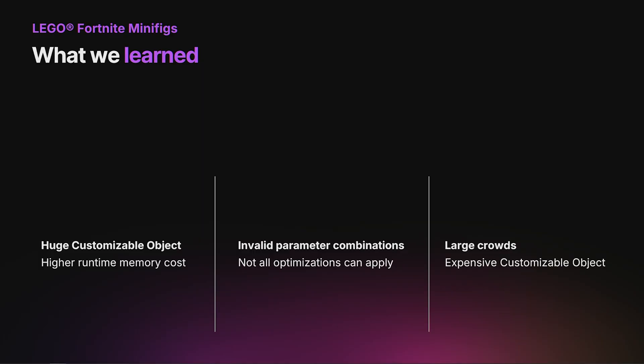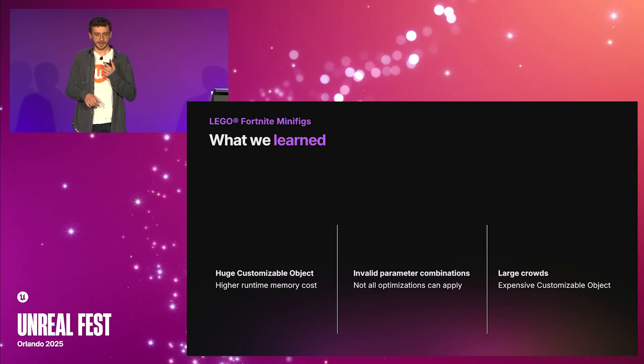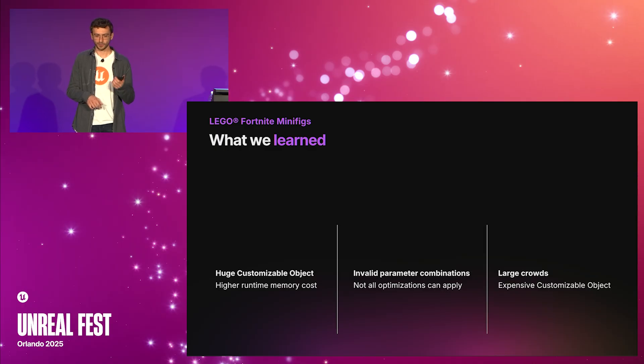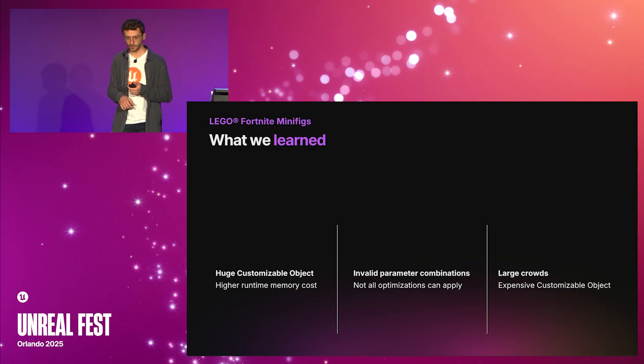Since minifigs was a huge project, we learned a few lessons. Due to having a one-to-one relation between minifigs and existing Fortnite characters, there was a huge number of minifigs, meaning the customizable object was very large. Due to its size, we had to split the customizable object to avoid a high runtime memory cost. We are always actively working to reduce Mutable's memory footprint. Also, due to how the graph was designed, there were some invalid parameter combinations that made some optimizations impossible. Always try to design your graph with only valid combinations in mind.